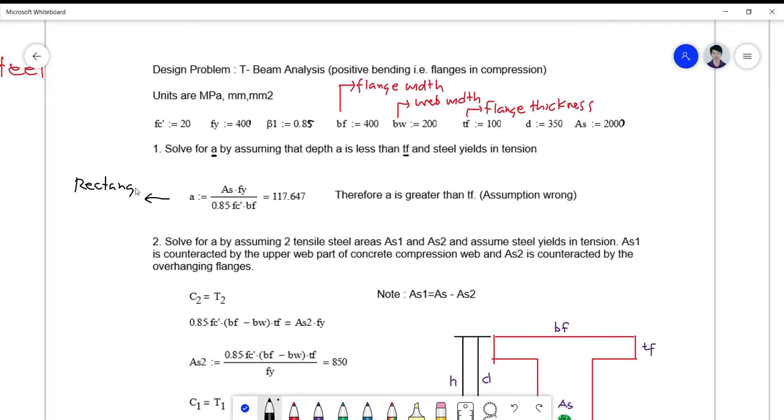So we all know for a fact that if the depth of stress block A is less than the thickness of the flange TF, then the formula for the depth of the stress block becomes a simple rectangular beam problem. We have to bear in mind that this is a simple rectangular beam problem.